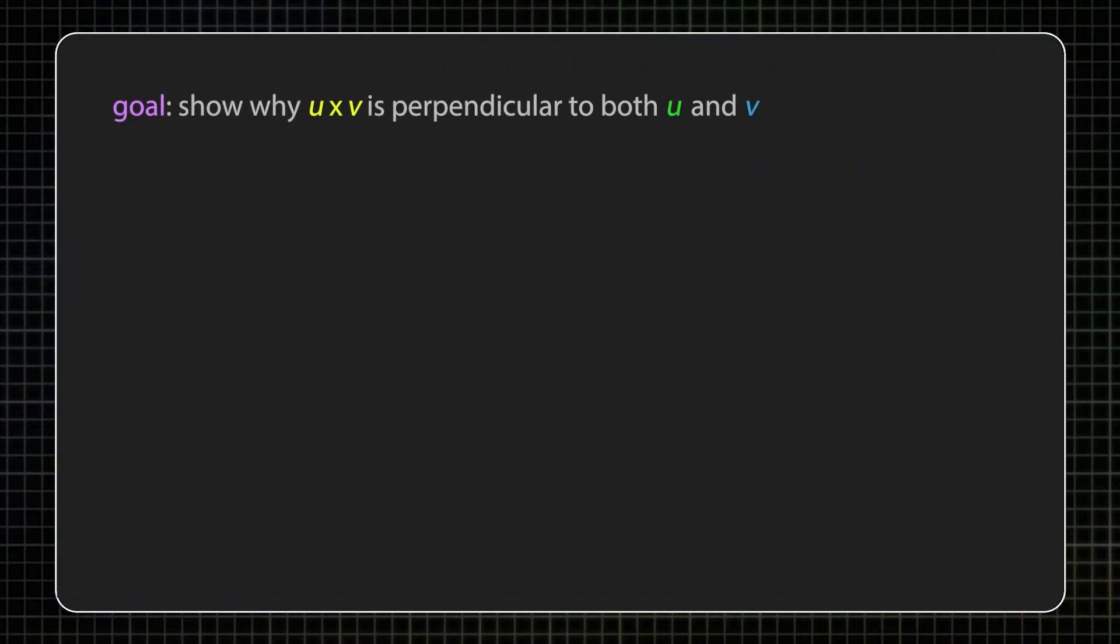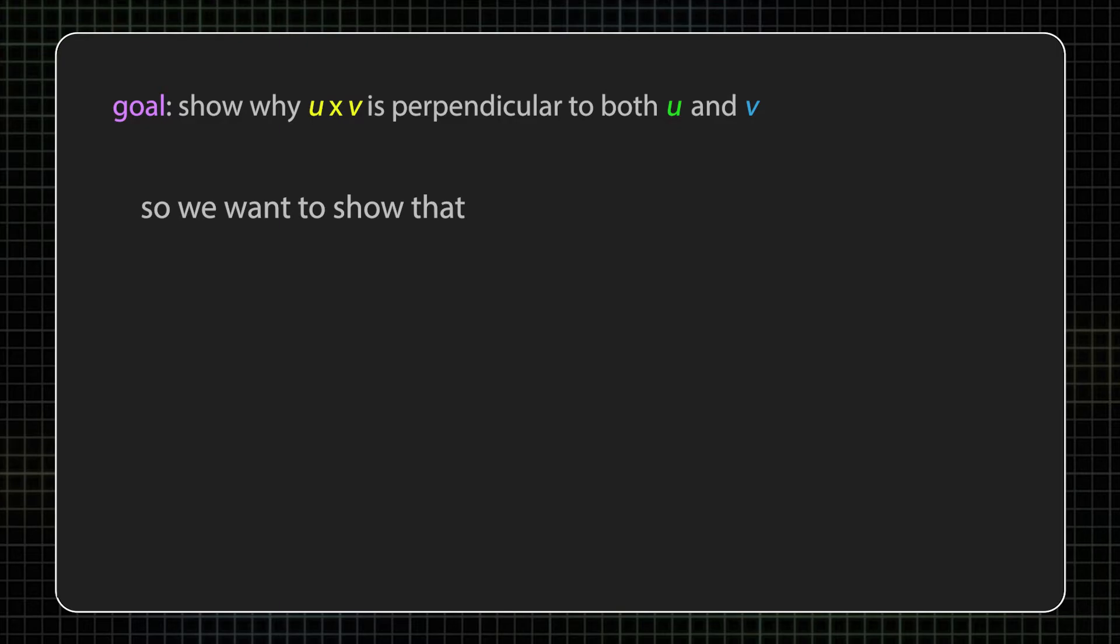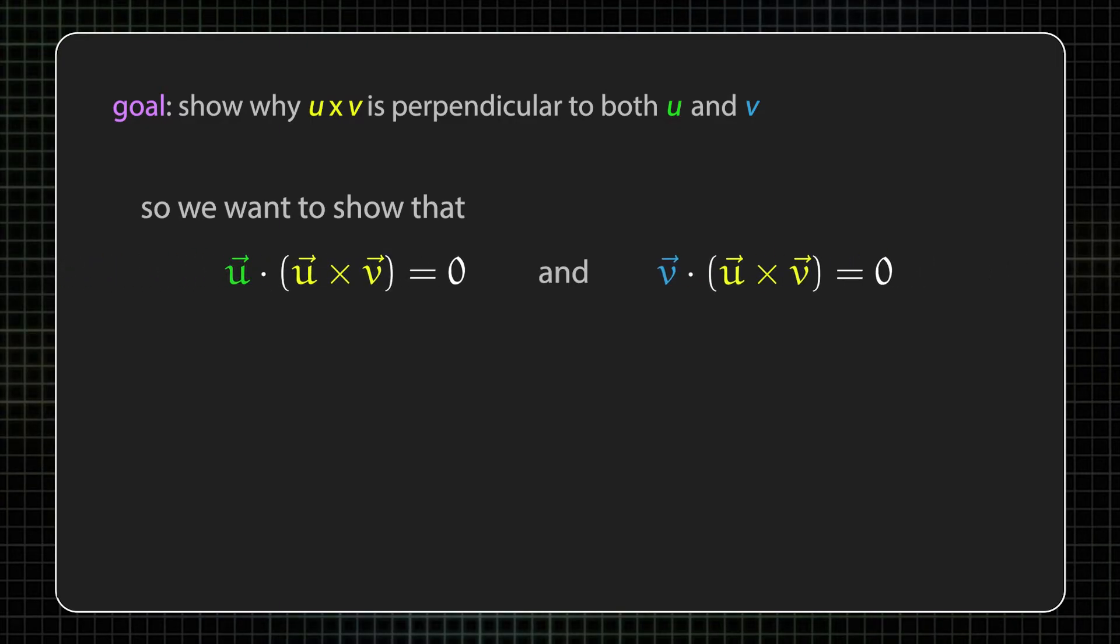So our original goal was to show why the cross product of u and v is perpendicular to both u and v. From what we've discussed about the dot product, this is equivalent to saying that u dot (u cross v) and v dot (u cross v) are both zero. Let's just focus on one of those two statements.